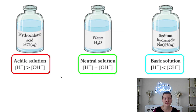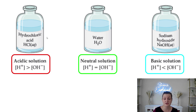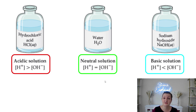In an acidic solution, we have more H positives than we do OH negatives in the aqueous solution. If it's neutral, they're going to be equal — we're going to have equal parts of the H positive and OH negative together in total.